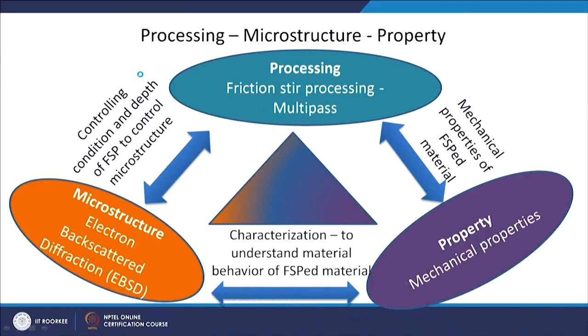Hello friends. Continuing with our severe plastic deformation module, today I am going to cover another very important technique in severe plastic deformation. It is based on shear deformation in the material and is called friction stir processing. As is true for any other processing method, this is connected with microstructural change, as we saw in ECAP or in other processing methods also.